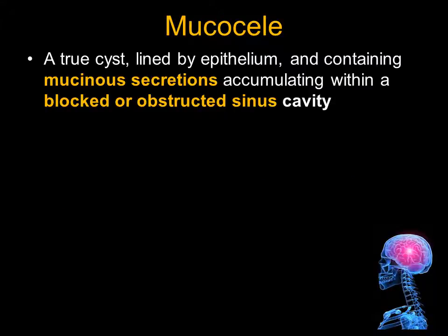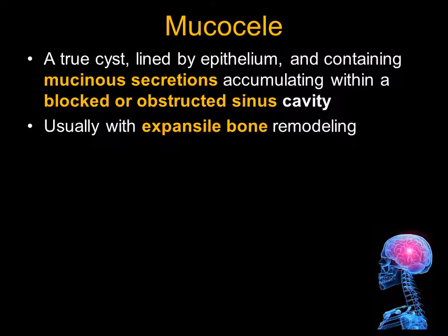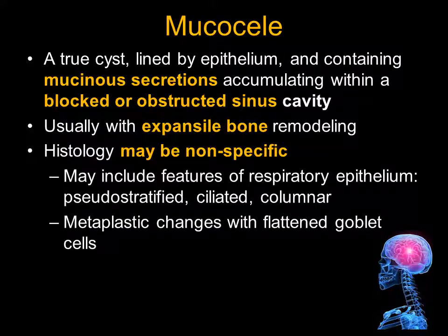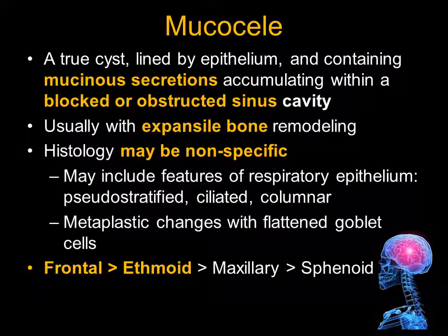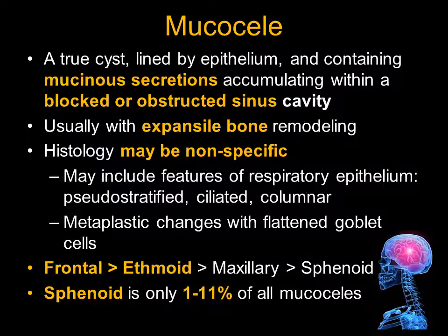Our patient actually has a mucocele. A mucocele is a true cyst lined by epithelium and containing mucous secretions. The sinus ostium is obstructed, and the sinus cavity cannot drain. This results in secondary expansion of the sinus cavity with bony remodeling. The histology is often nonspecific because of the chronic nature of the obstructed sinus ostium. The most common location for a mucocele is in the frontal sinus, and the least common location is in the sphenoid sinus.